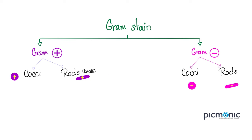Today we will mention group B streptococci — these are gram-positive cocci, called Streptococcus agalactiae, also known as group B strep. We'll also talk about congenital syphilis. Syphilis is a Treponema — it's a spirochete. Anatomically it was supposed to be gram-negative, but in reality in the lab it does not stain with gram. That's why we need other methods such as dark field microscopy.